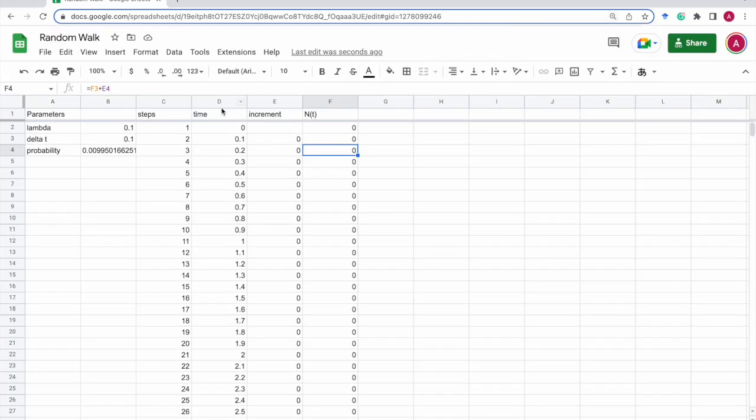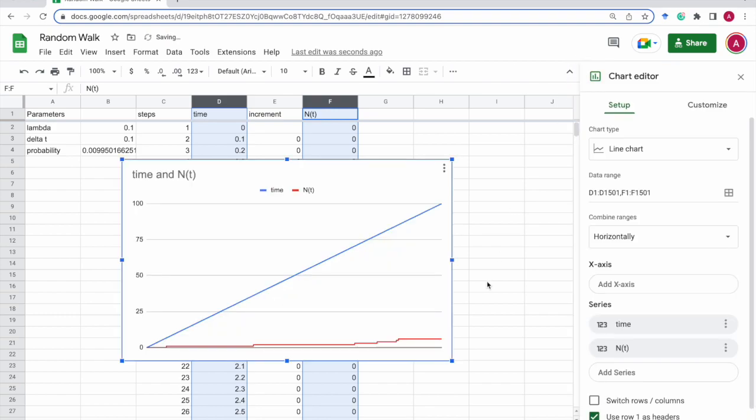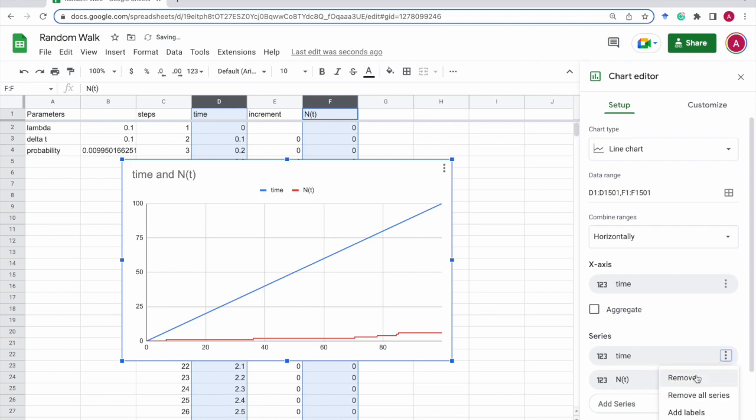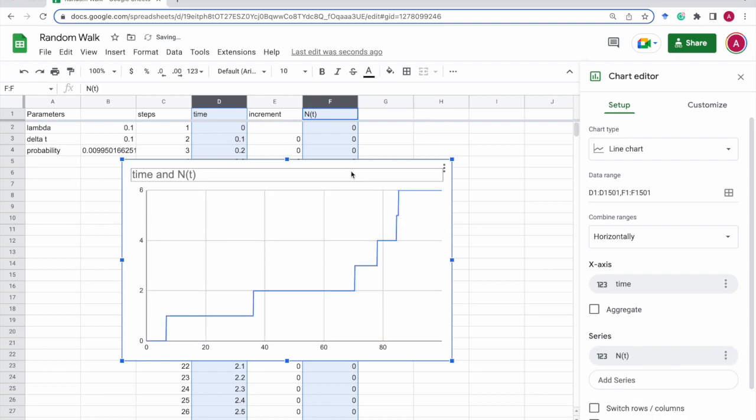So let's plot them. So time and the random variable. Let's plot it. I should use time for this and remove this. So here it is.